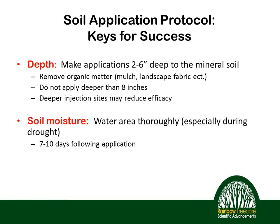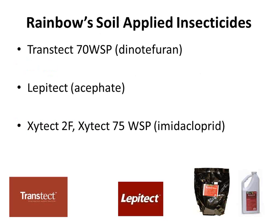Water the area thoroughly — especially during drought — both in the days leading up to the application and immediately after. With products that have a long residual in the soil like imidacloprid, sustained watering throughout the growing season can enhance the uptake and movement of these products. So those are some of the key success factors in making systemic applications.